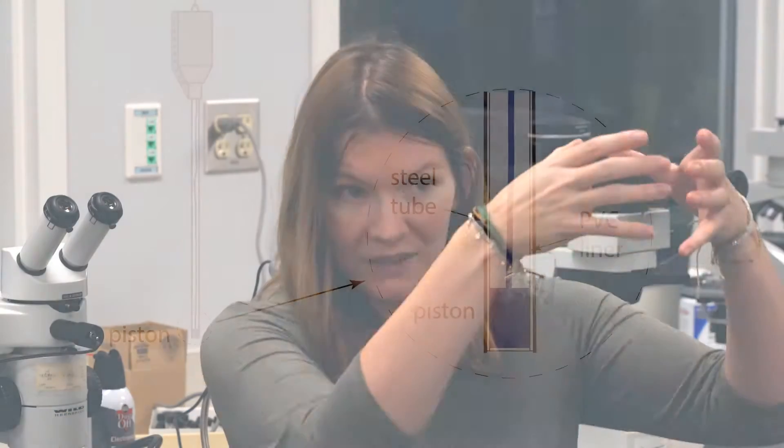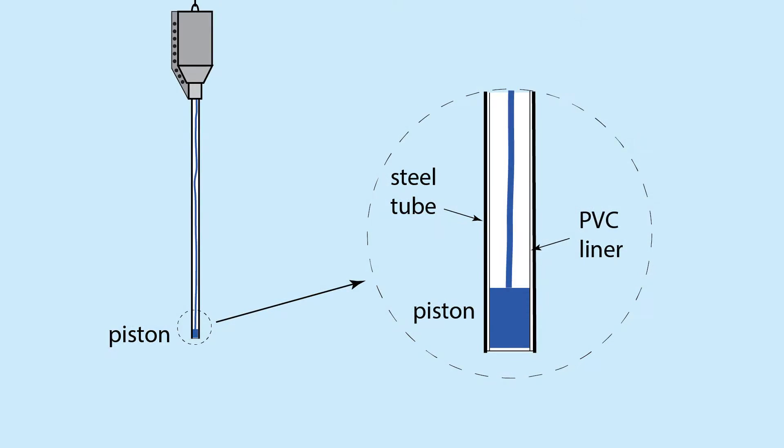A piston coring system centers around the use of a piston in the top of the core barrel. That piston serves the function of providing a vacuum when the core goes into the sediment column, which prevents the sediments from being deformed and squished as the barrel goes into the sediment.